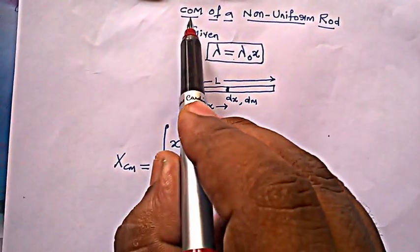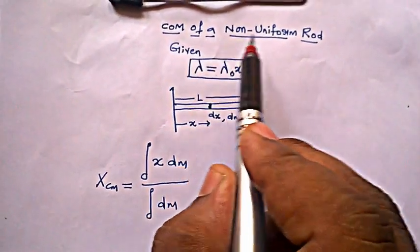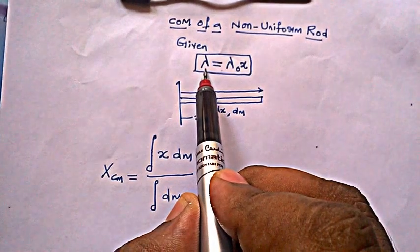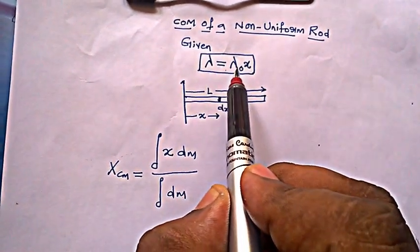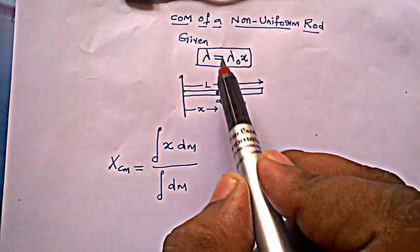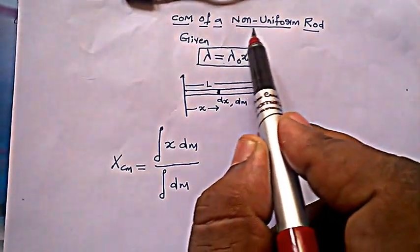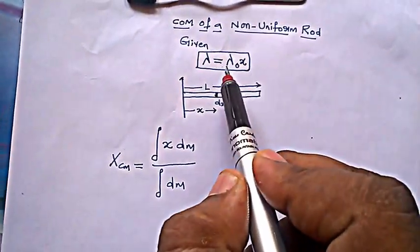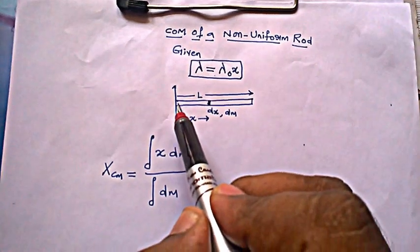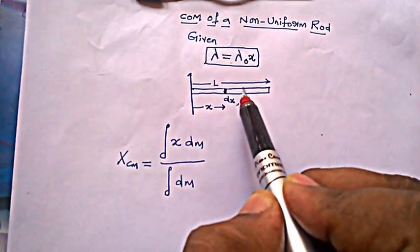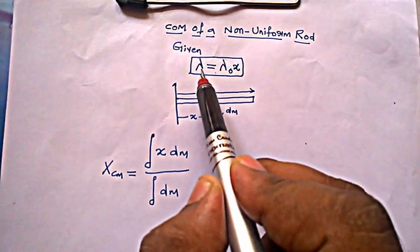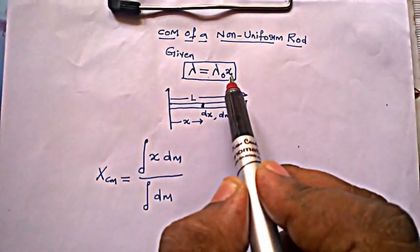Hello guys, this is a video on how to find out the center of mass of a non-uniform rod, given linear mass density lambda is lambda naught into x. In my last video I told you how to find out the center of mass of a uniform rod, but this is a non-uniform rod, which means mass is not uniformly distributed over the rod — it is distributed in a way lambda equals lambda naught times x.